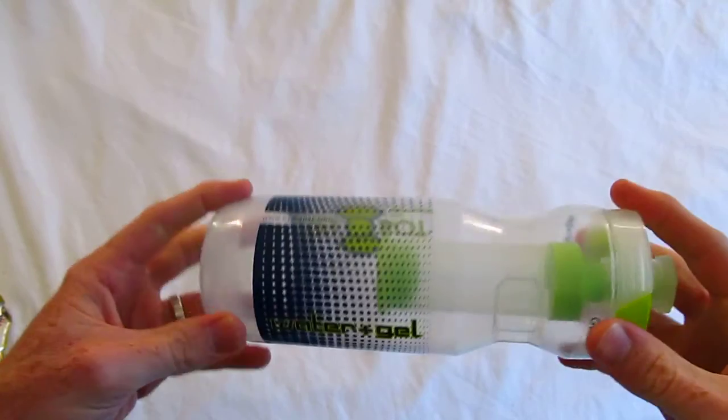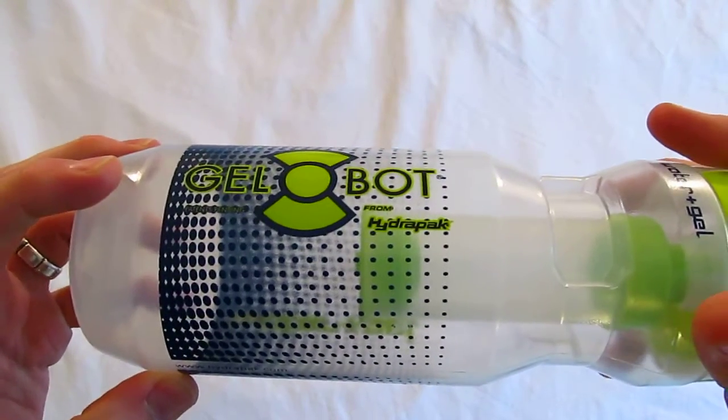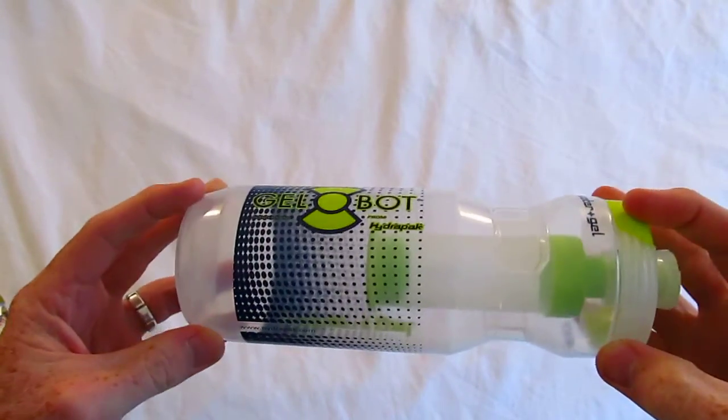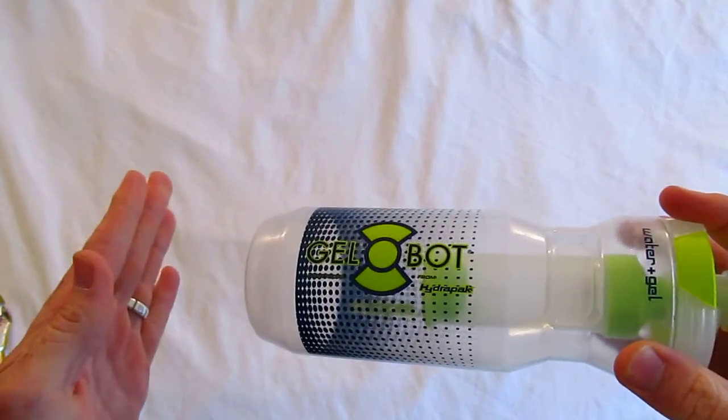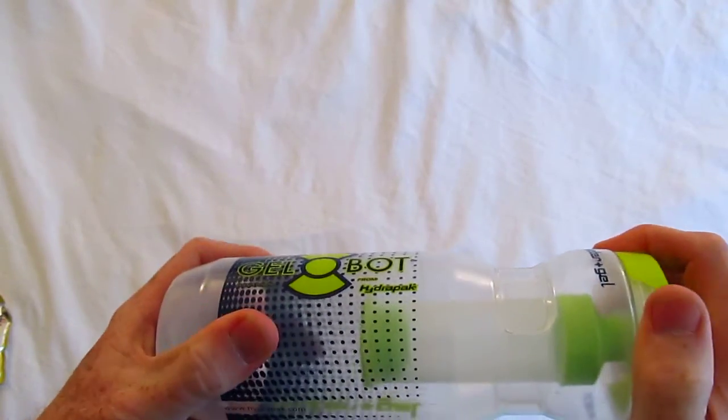Anyways, that's my review on the gel bot from Hydra Pak. Again, it is a 20 ounce for $13.99 or you can get a 24 ounce for $14.99. And thank you from trailrunningsoil.com.